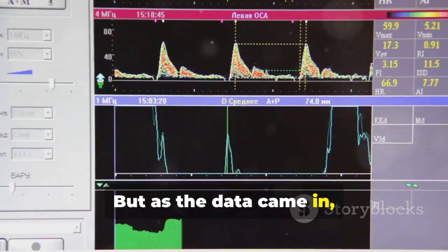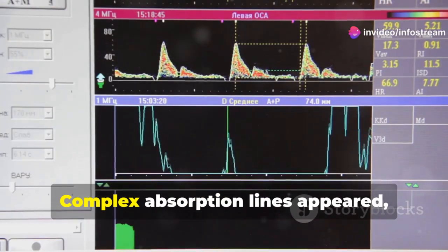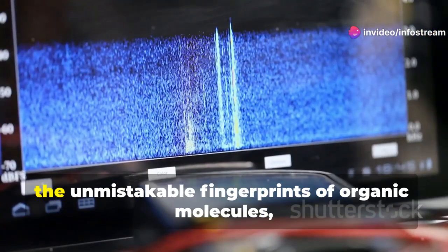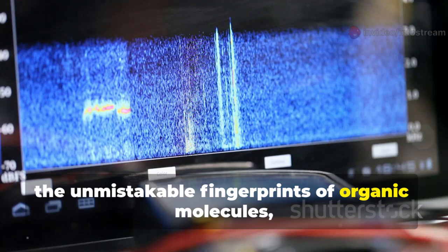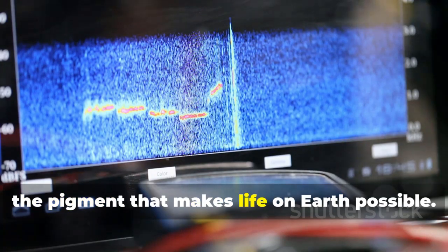But as the data came in, they found those familiar signatures, and something entirely unexpected. Complex absorption lines appeared, the unmistakable fingerprints of organic molecules, eerily similar to chlorophyll, the pigment that makes life on Earth possible.